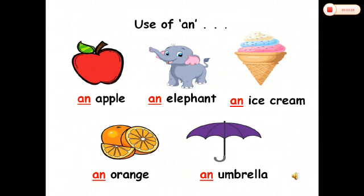In the third picture you can see a nice ice cream. Ice cream starts with the letter I, which is a vowel letter, so you will use 'an' with it: an ice cream. In the next picture you can see 'orange'. Orange starts with the letter O, which is a vowel, so you will use 'an' with it: an orange. In the last picture you see 'umbrella'. Umbrella starts with the letter U, which is a vowel, and you will use 'an' with it.